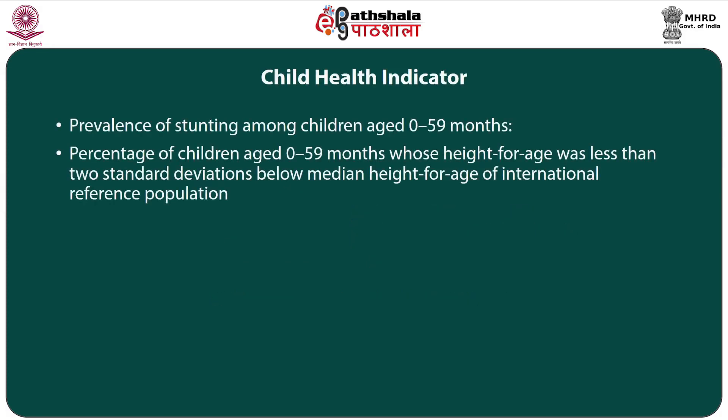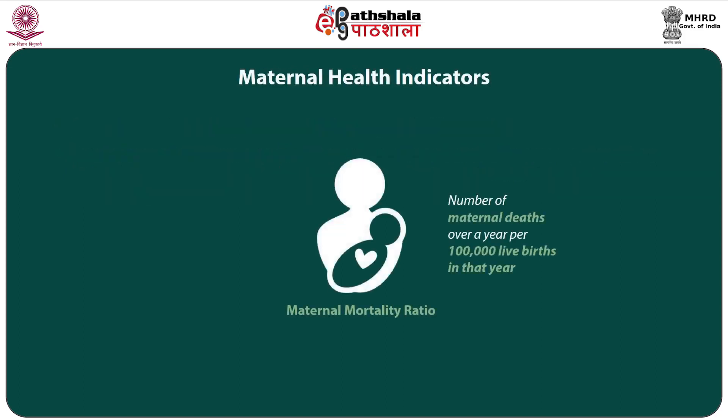The child nutrition indicator is the prevalence of stunting among children aged 0 to 59 months — the percentage of children whose height-for-age is less than 2 standard deviations below the median height-for-age of the international reference population. As regards maternal health indicators, we have the maternal mortality ratio — the number of maternal deaths per 100,000 live births in a given year.